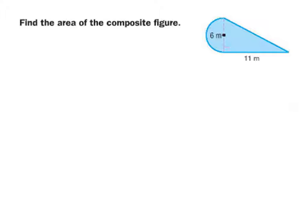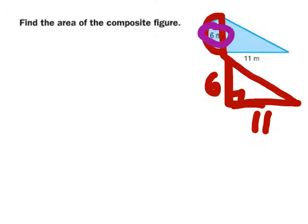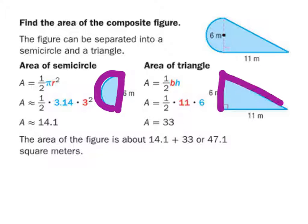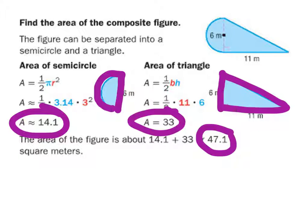On this one, they've given you a half circle or semicircle and a right triangle with side lengths of 6 and 11 meters. The altitude is 6 because that's where the right angle is. The 6 up here tells us that our radius is going to be 3 meters. So you find the area of the semicircle and the triangle, add the two together, and you get 47.1 square meters.